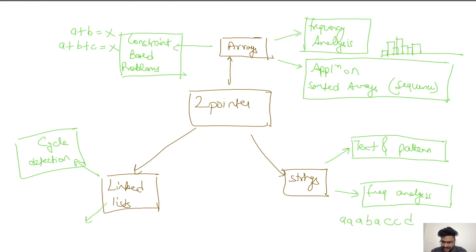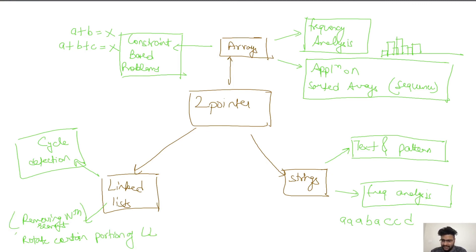The other kind of linked list problem involves removing the nth element or rotating a certain portion of a linked list. For example, how do we remove the nth element from the end? Identification of that nth element is very important. Similarly, a question could ask us to rotate a portion of a linked list starting five nodes from the beginning and six nodes from the end. The key in linked list problems is the identification of the particular node, and that's where two pointers come into the picture.